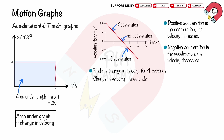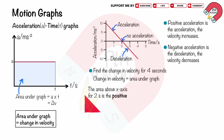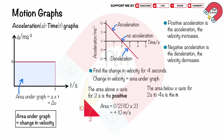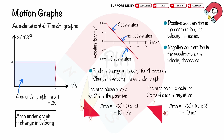We can find the change in velocity for 4 seconds from the area under the graph. The area above the x-axis for the first 2 seconds is positive and forms a triangle, so the area equals ½ × 10 × 2 = positive 10 meters per second. The area below the x-axis from 2 seconds to 4 seconds is negative and also forms a triangle, so the area equals ½ × (−10) × 2 = negative 10 meters per second. Therefore, the change in velocity for 4 seconds is 10 − 10 = 0.